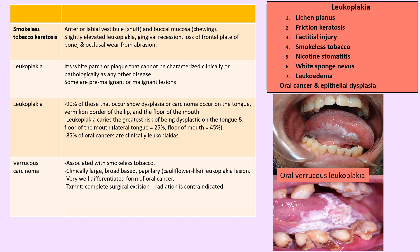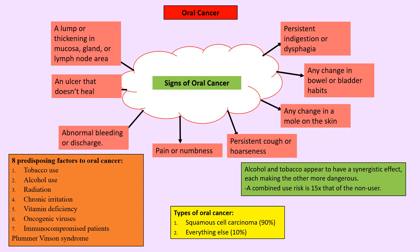Leukoedema: when you stretch it, it disappears, but leukoplakia does not. Signs of oral cancer include sores that don't heal, abnormal bleeding, dysphagia, change in a mole, persistent cough, pain, and numbness. Tobacco and alcohol are the most important predisposing factors with a synergistic effect. Ninety percent of oral cancers are squamous cell carcinoma.